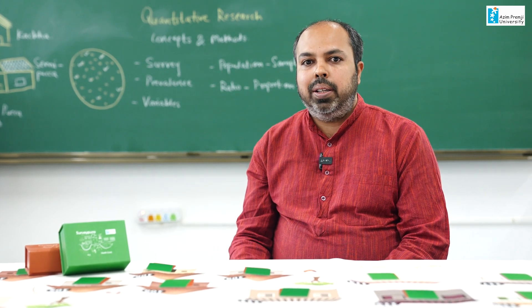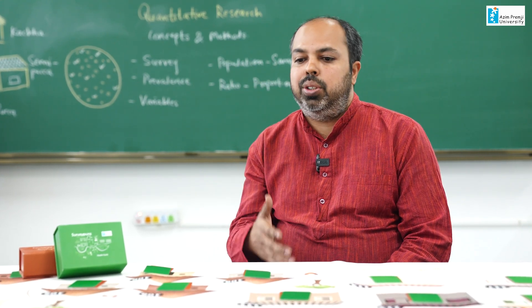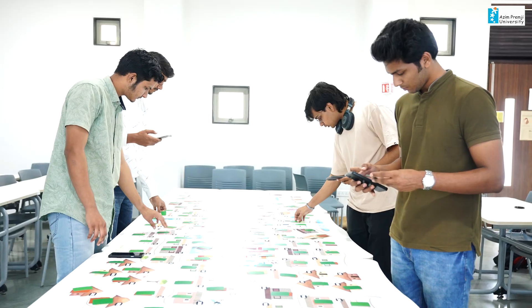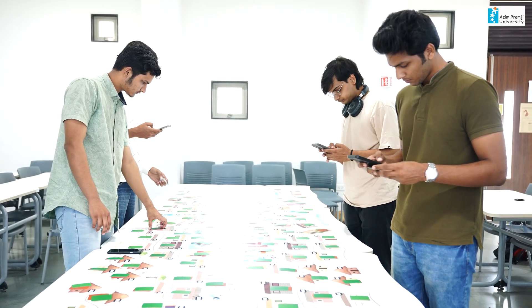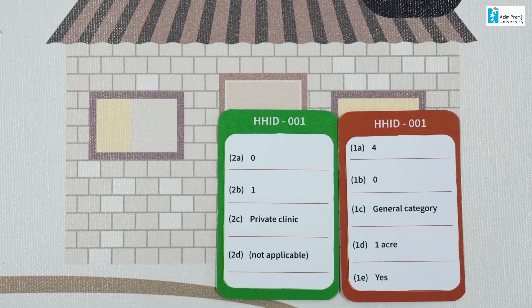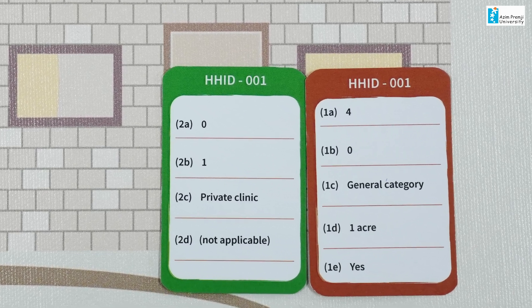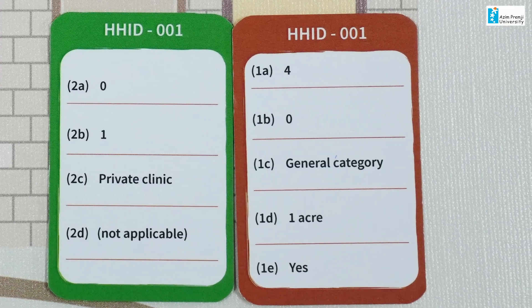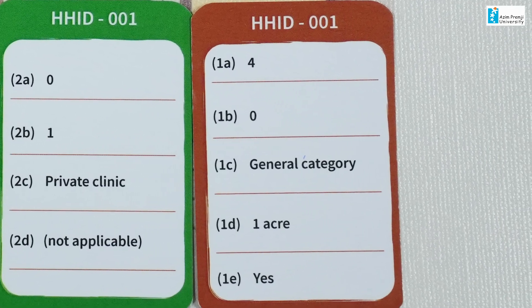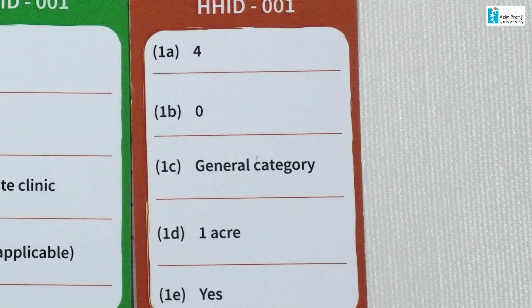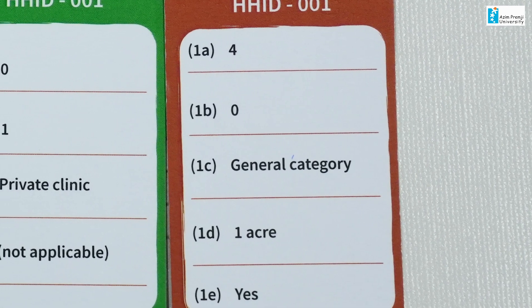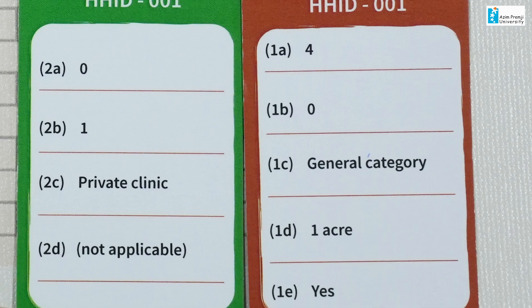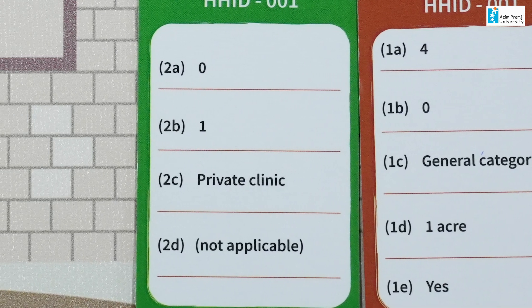After preparing the lesson plan, the next step is to arrange the tool in the class — preferably in the centre so that all students can gather around it. Each household in the village is numbered and has a specific socio-demographic card and a health card. The socio-demographic card is brown and has the household number printed on top, so you can find the household and place it accordingly. Similarly, the health card, which is green, also has a specific number to help you place it on the right household.